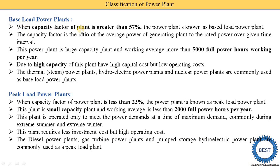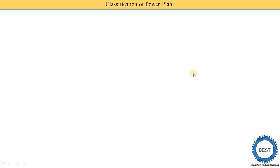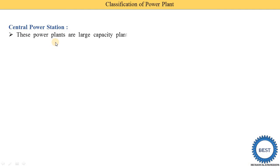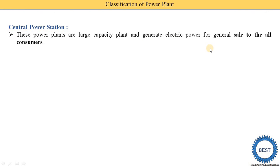To summarize the examples: base load power plants include steam power plants, hydroelectric power plants, and nuclear power plants. Now, the central power station is a large capacity plant that generates electric power for general sale to all consumers. A central power plant supplies power to industries, residential areas, and commercial users — the electricity coming to our homes comes from the central power station.